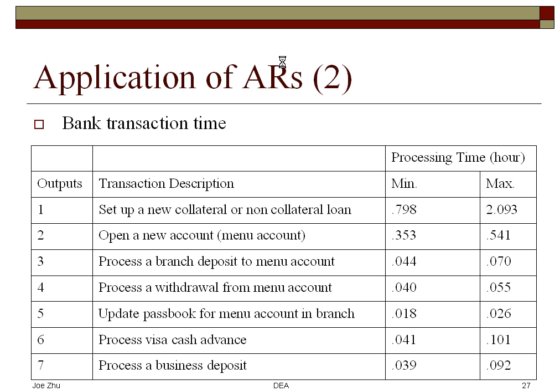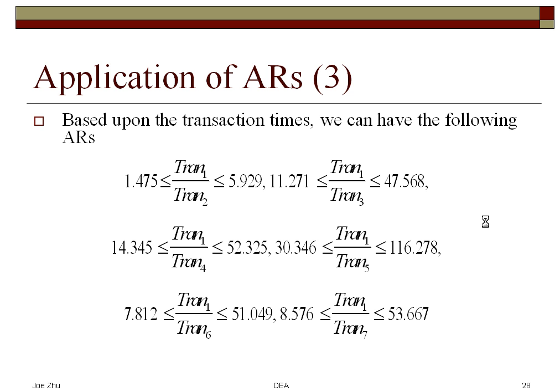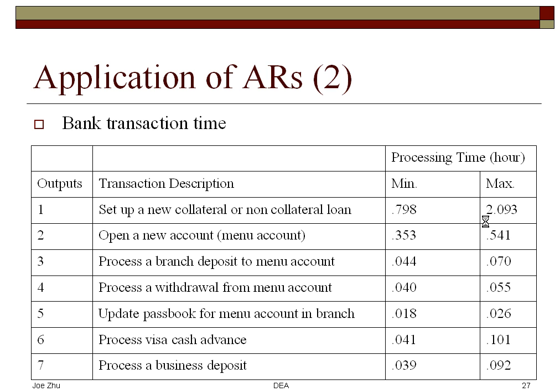Here is an example where we actually used the processing time for transactions in bank branches. You have seven different types of transactions, and each transaction takes a different amount of time to finish. For example, for the second transaction — opening a new account — the range of time needed to process that transaction is given in this table. You develop some sort of range based on that and then compute the ratios. These assurance regions are developed based upon the minimum and maximum processing times shown in the table.